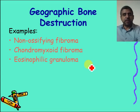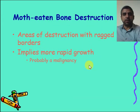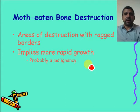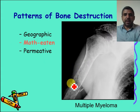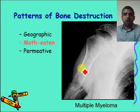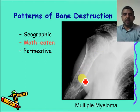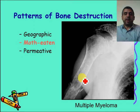The second type is moth-eaten bone destruction. There are areas of destruction with ragged, ill-defined borders. We will not agree on the extent of the tumor — our drawn lines will not match. This means an aggressive, most likely malignant tumor. For example, this is a case of multiple myeloma. The whole bone is moth-eaten with multiple areas of radiolucency, even in the acromial process and the head of the humerus — all ill-defined, implying a very aggressive bone tumor.